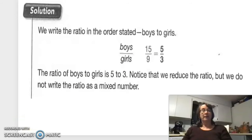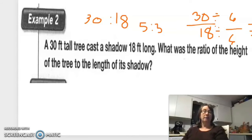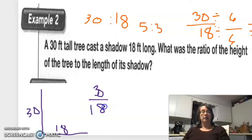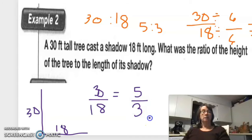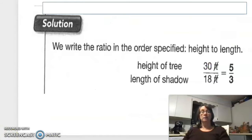A 30-foot tall tree casts a shadow 18 feet long. What is the ratio of the height of the tree to the length of the shadow? Height was 30 and shadow was 18. We divide both by 6: 30 divided by 6 is 5, and 18 divided by 6 is 3. So the ratio is 5/3, or five to three.